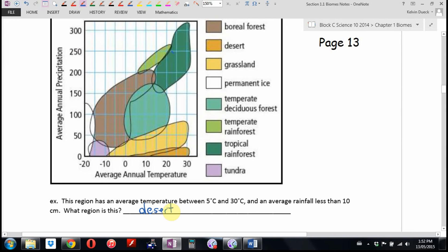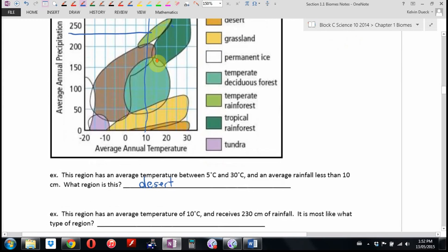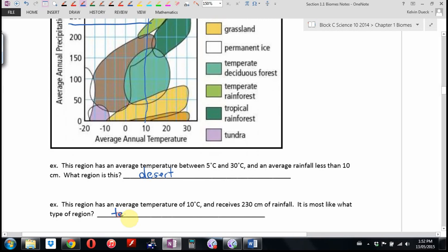The next one says we have an average temperature of around 10 degrees, and we get around 230 centimeters of rainfall. 10 degrees is here. 230 centimeters would be right about there. What are we looking at? Now, I haven't yet told you what each and where each of these are located, but we can already name them. Temperate rainforest.